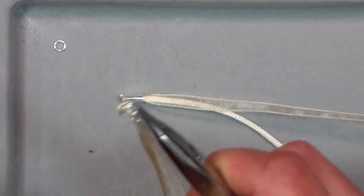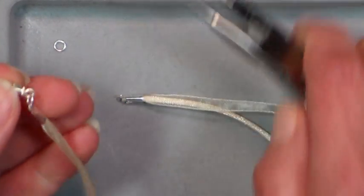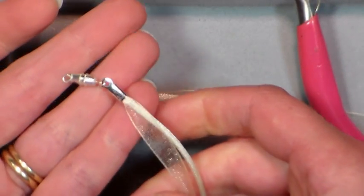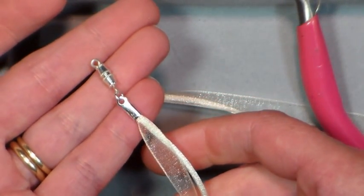Always open and close your jump rings with a twisting motion. You don't want to open it up like a U because you'll never get it closed tight again, so that's what that should look like.